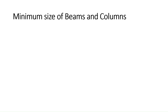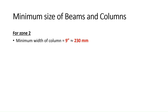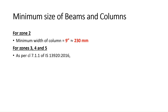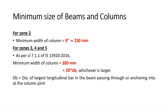Let's now look at the minimum size of beams and columns recommended by IS codes. For a structure situated in Zone 2, the minimum width of the column is 9 inches, approximately 230 mm. However, for Zones 3, 4, and 5, as per clause 7.1.1 of IS 13920, the minimum width of the column is 300 mm or 20 times dB, whichever is larger.